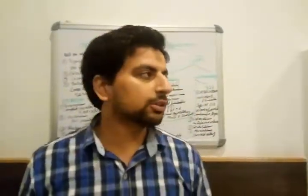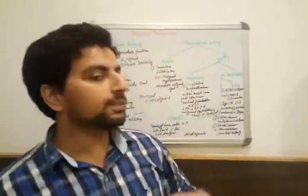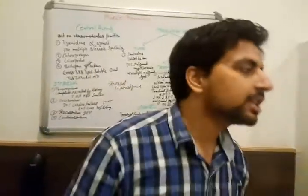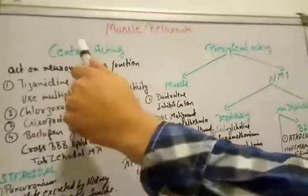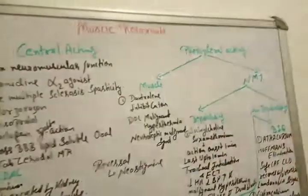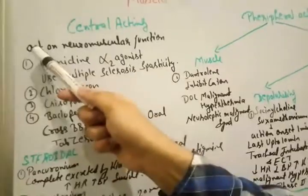Good evening doctors, myself Dr. Nima Sharma and today I am going to explain you about the muscle relaxants. So in anesthesia topic these are divided into two classifications: centrally acting and peripheral acting. I am going to explain you about first centrally acting.